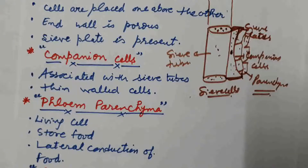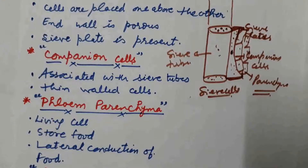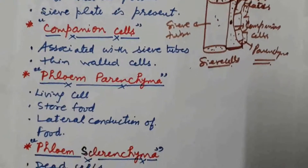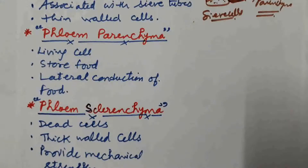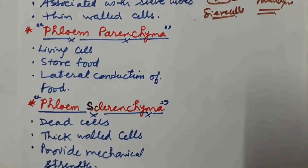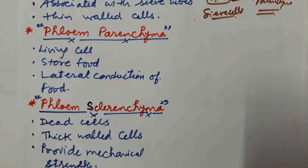The fourth cell type is phloem sclerenchyma. These are sclerenchymatous in nature — dead cells with thick walls that provide mechanical strength. So these four types of cells — sieve tubes, companion cells, phloem parenchyma, and phloem sclerenchyma — constitute the phloem.